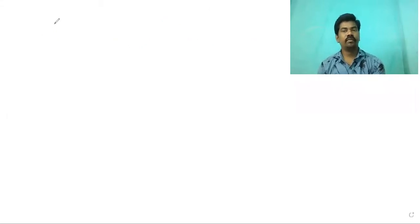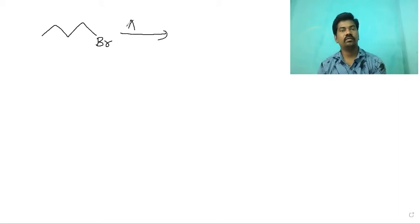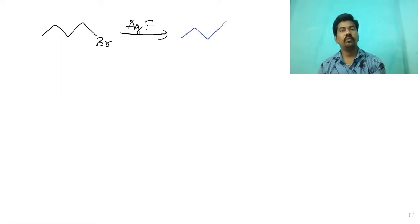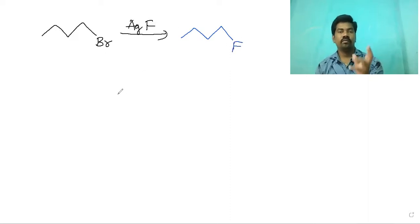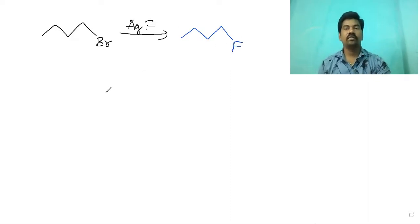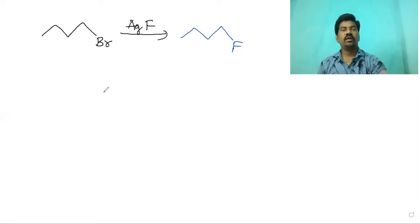For example, an alkyl bromide reacted with silver fluoride (AgF) will be converted to an alkyl fluoride — the bromine is replaced and occupied by fluorine. So this product is obtained by the Swartz reaction in the presence of an inorganic fluoride.